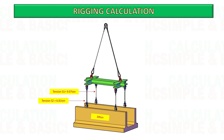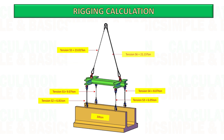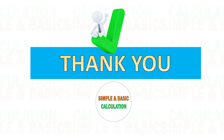Summary: as per our rigging calculation we get all the tension in each sling. Now you can decide the size of lifting gear to be used based on the sling tension. Make sure you have enough safety factor for your sling based on the sling tension.